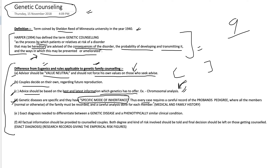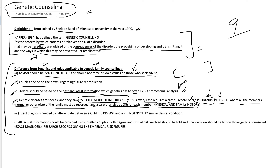Every case therefore requires a careful record of the proband's pedigree. The proband is the main person being studied — the one who has the particular trait, disease, or gene of concern. Pedigree refers to the total analysis of all ancestors and subsequent generations of the proband, recording whatever diseases they had. All family members, normal or otherwise, must be recorded, and a careful analysis done for each member. Medical and family history is very important in genetic counseling.